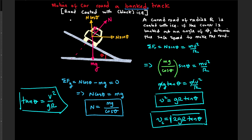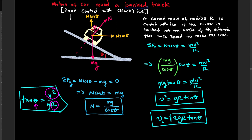So what does this mean? It means that the banking angle depends on the speed of the car and the radius. For a given road, the radius of the circular part is constant. That in turn implies that the banking angle actually depends on the speed of the car.